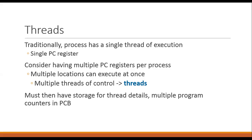So far, the processes that we have discussed have a single thread of execution. In the coming lectures, we will discuss how multi-threaded applications are designed and what are the relevant characteristics that need to be considered while designing multi-threaded applications. If an application or a process is multi-threaded, there would be more information in the process control block. That is, multiple program counter registers will be stored in the process control block to represent these different threads against the process.